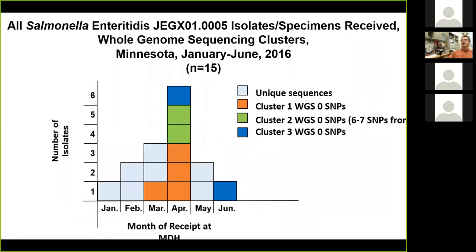This is a high-quality SNP tree. You do whole genome sequencing, you get these trees, these trees indicate the number of SNP differences, you look at them, and you know what outbreaks to investigate. Here's one example. These are isolates within one PFGE type. You have unique whole genome sequences in light blue. In orange you have what's called cluster one — four isolates from four humans that differ by zero SNPs. You have cluster two in green, which differs by zero SNPs among the two of them, but they differ by six to seven SNPs from cluster one.